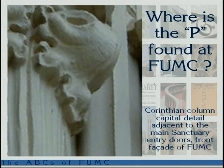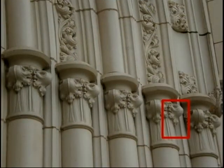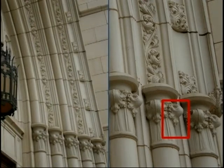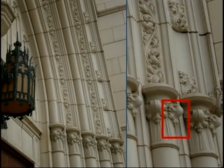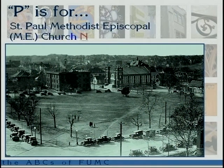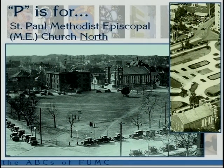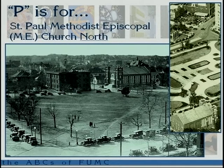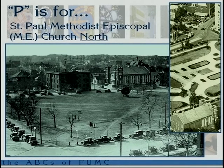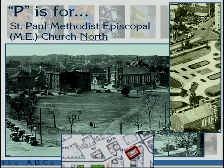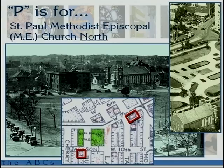Where's the P found? It's on the Corinthian columns on the outside front of the church — white terracotta clay that makes the ornamentation around the doors of the main entry. P is for St. Paul's Methodist Episcopal Church North, which we consolidated with in 1930 prior to moving into this building. It was only located a few blocks away from the Seventh and Taylor church, basically right across Burnett Park.